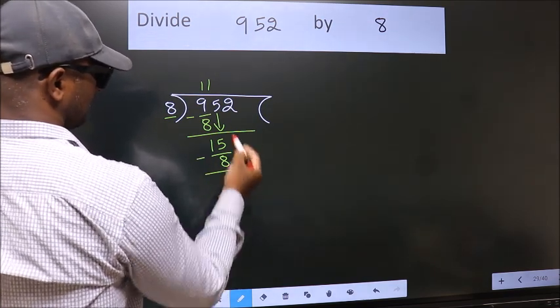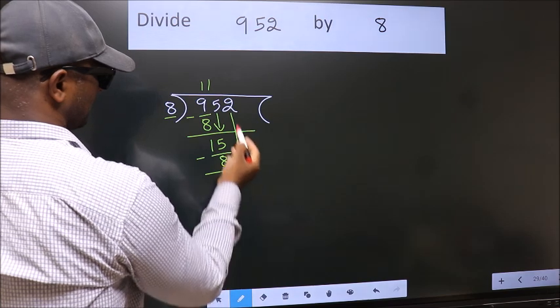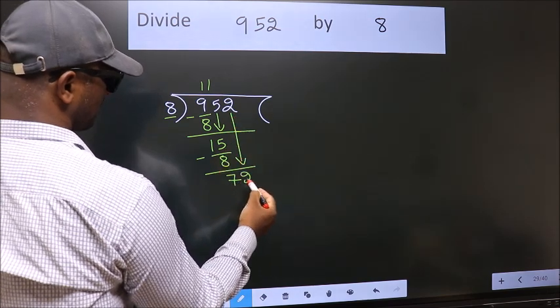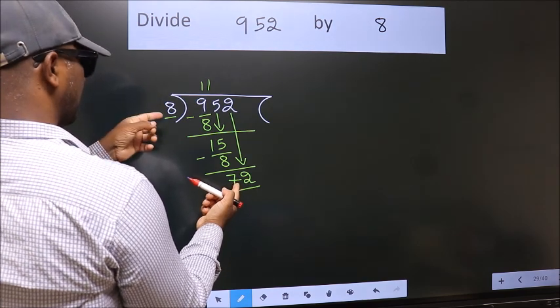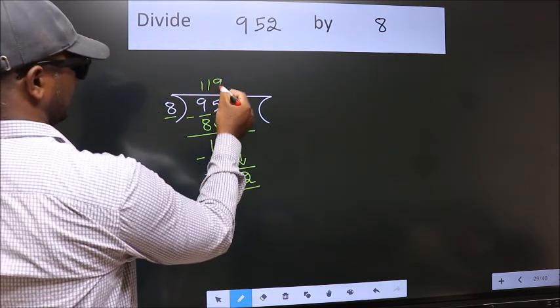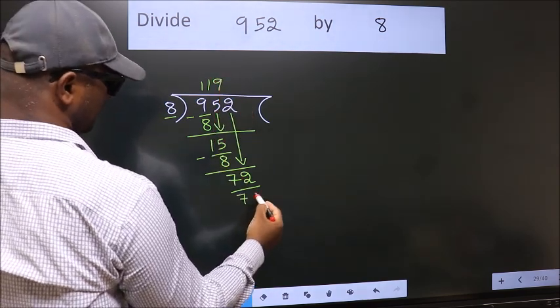After this, bring down the beside number. So 2 down, so 72. When do we get 72? In the 8 table. 8 nines 72.